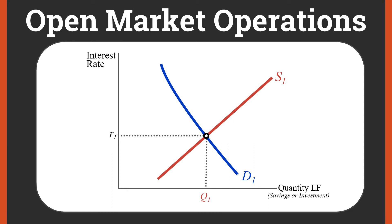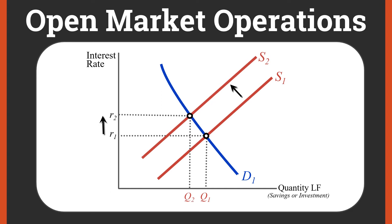If we look at open market operations with contractionary monetary policy, we can go the other way. When the Fed is looking to do a more contractionary monetary policy, it's trying to rein in our macro economy. What it's going to do is sell bonds. This is going to decrease the money supply, provide banks with fewer reserves, decrease the loanable funds supply curve, and our outcome is we end up with a higher interest rate. So expansionary monetary policy increases the money supply and lowers the interest rate; contractionary monetary policy decreases the supply and increases the interest rate.